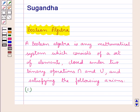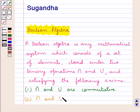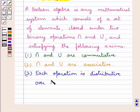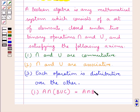The first axiom says that both the intersection and the union are commutative. The next one says that both the intersection and the union are associative. Then next we have that each operation is distributive over the other. For any three elements A, B and C: A intersection (B union C) is equal to (A intersection B) union (A intersection C).